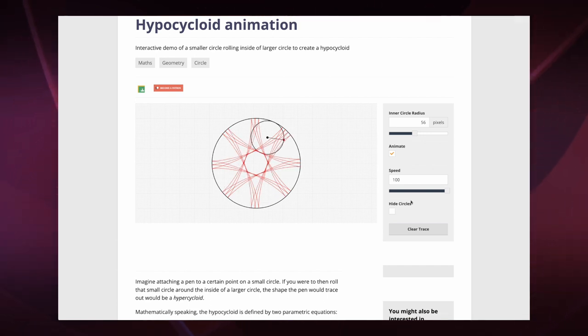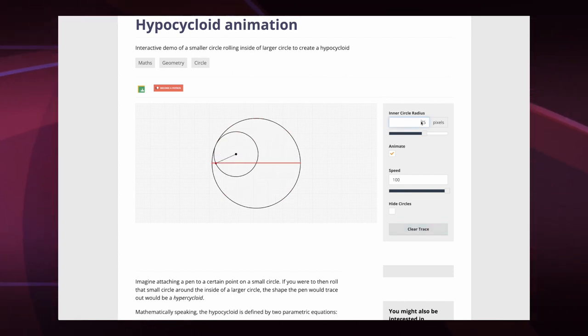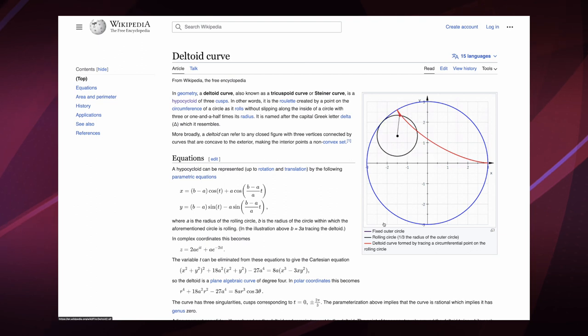There are even some special cases here when the diameter of the inner wheel is exactly half the diameter of the outer wheel. It draws a straight line. And how about this one, where the inner diameter is one-third of the outer. It's called a deltoid and that one even got its own wiki page.